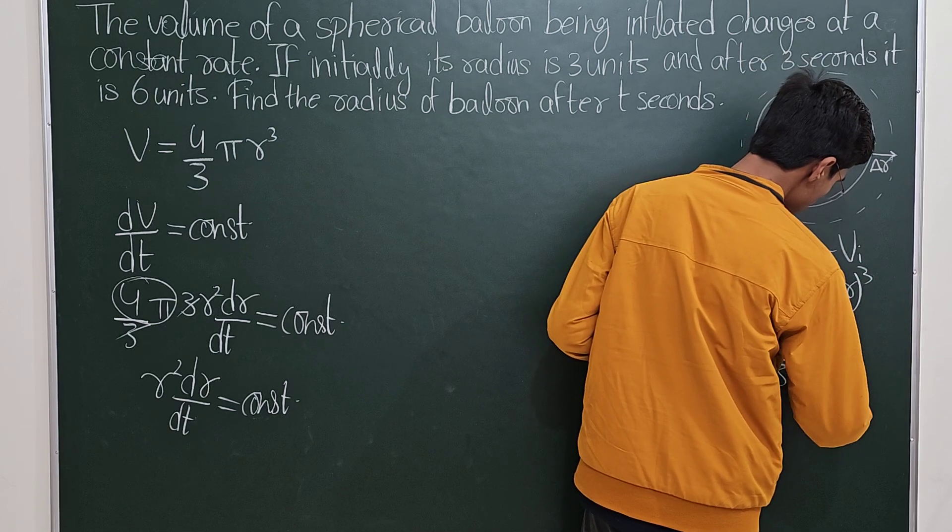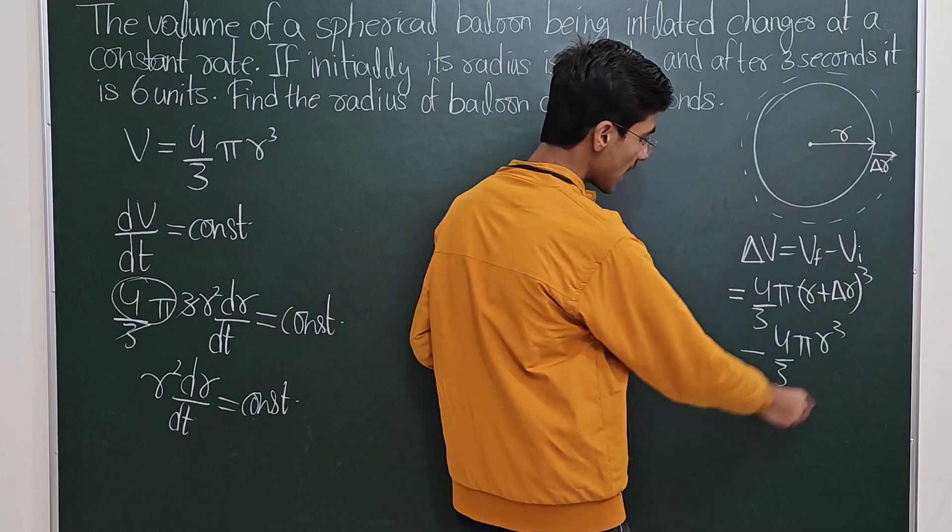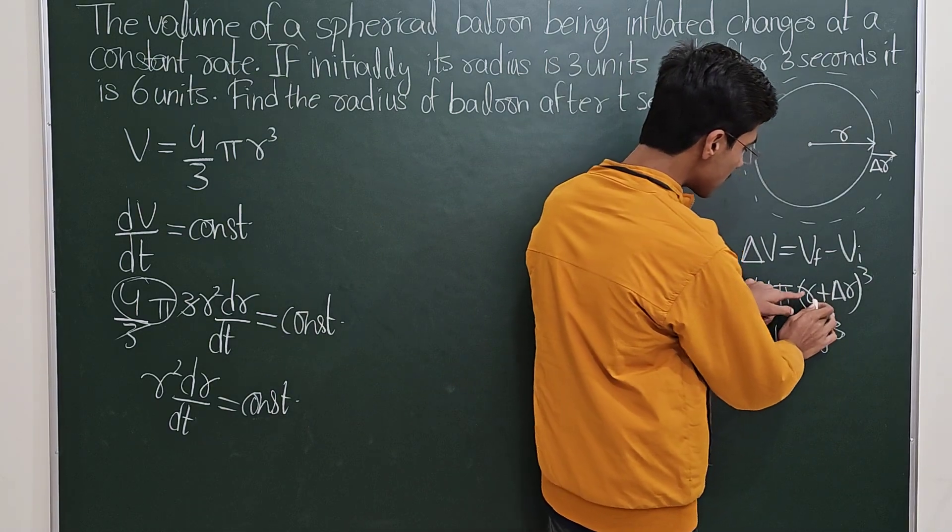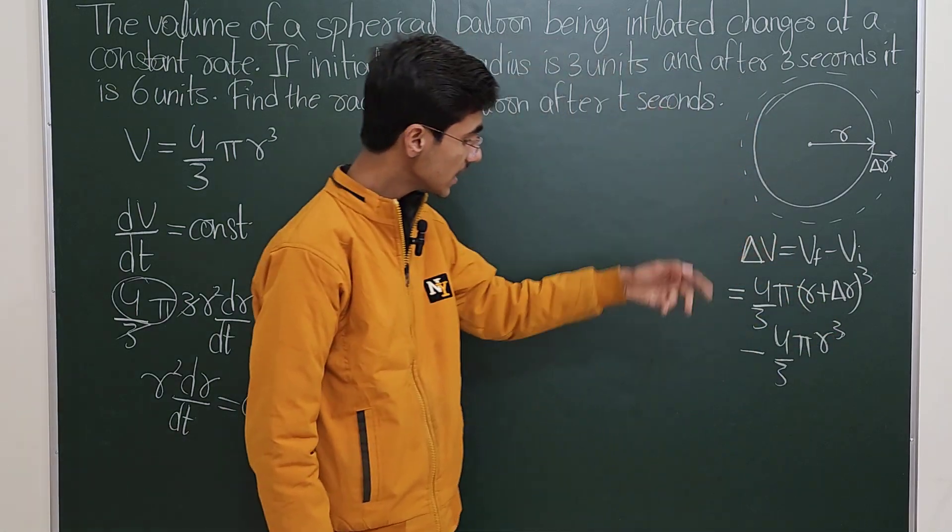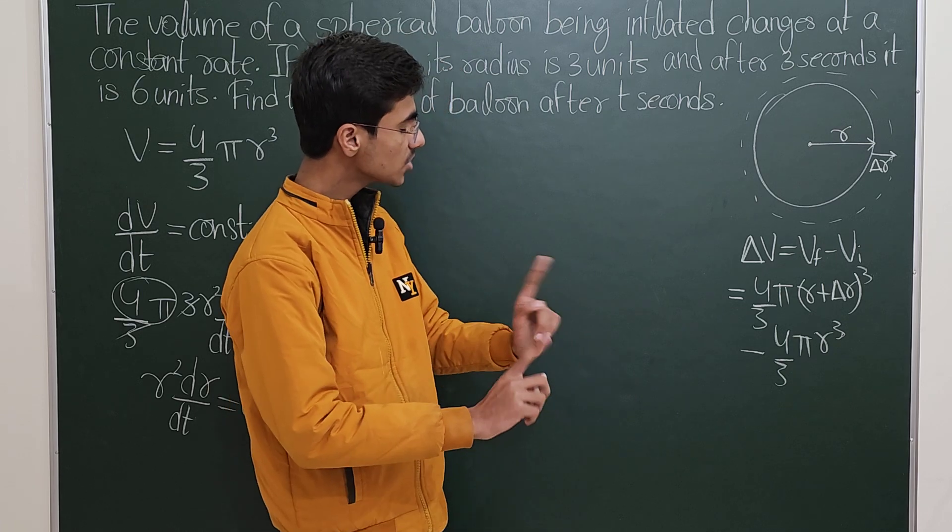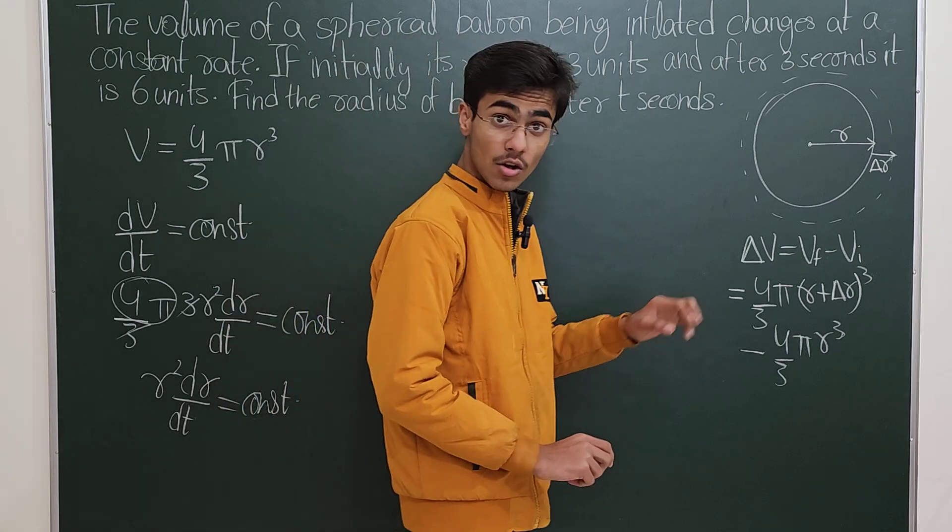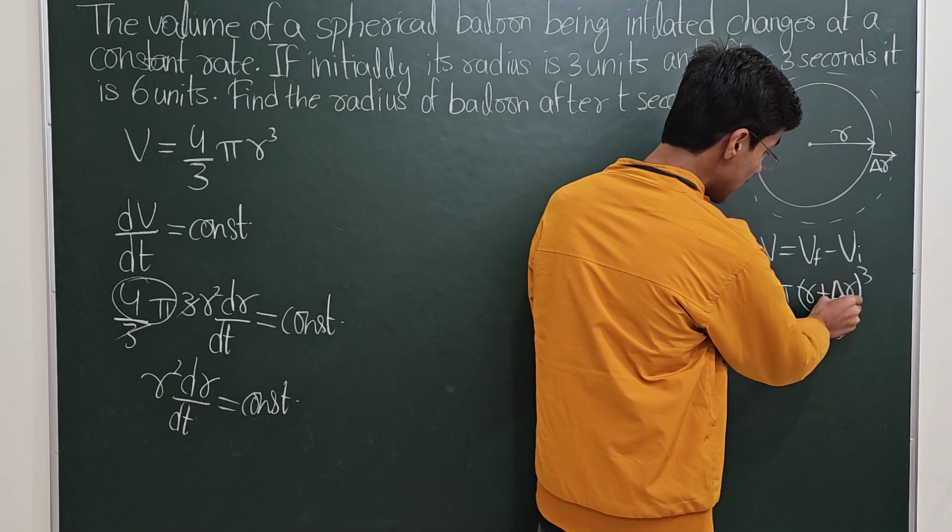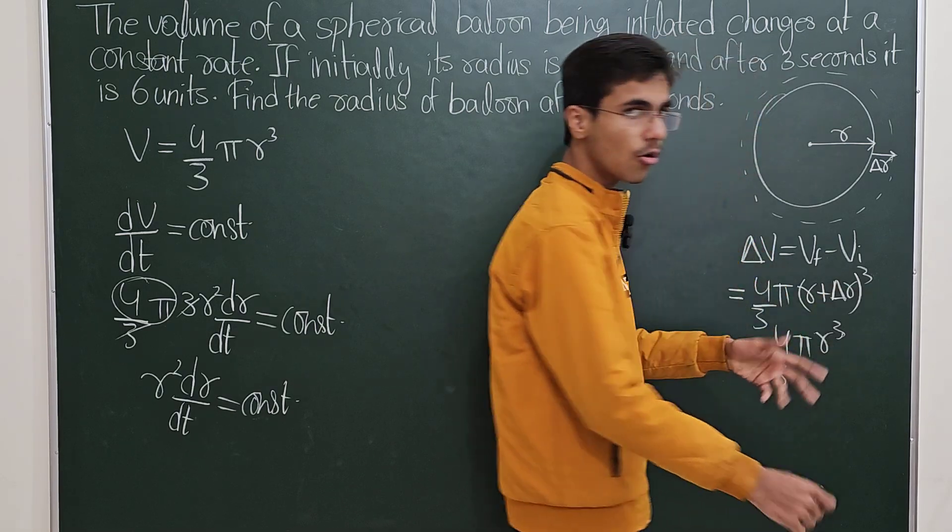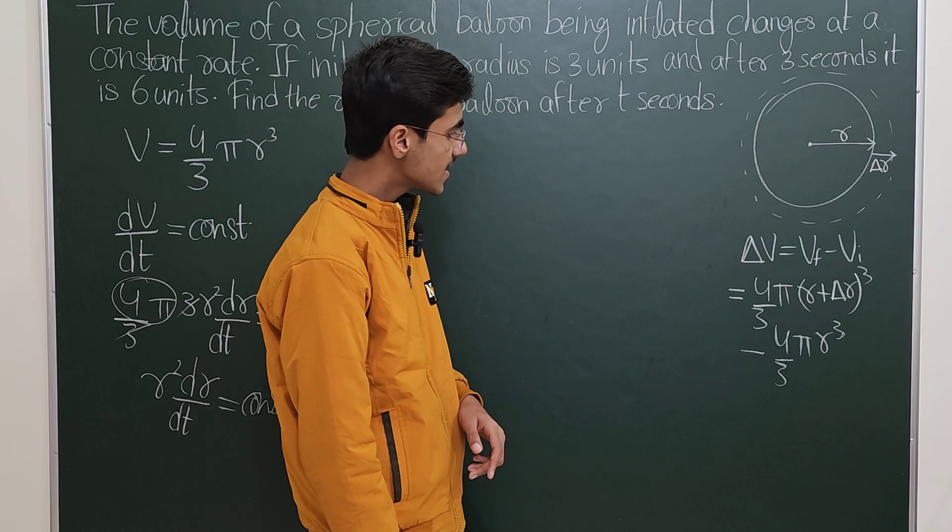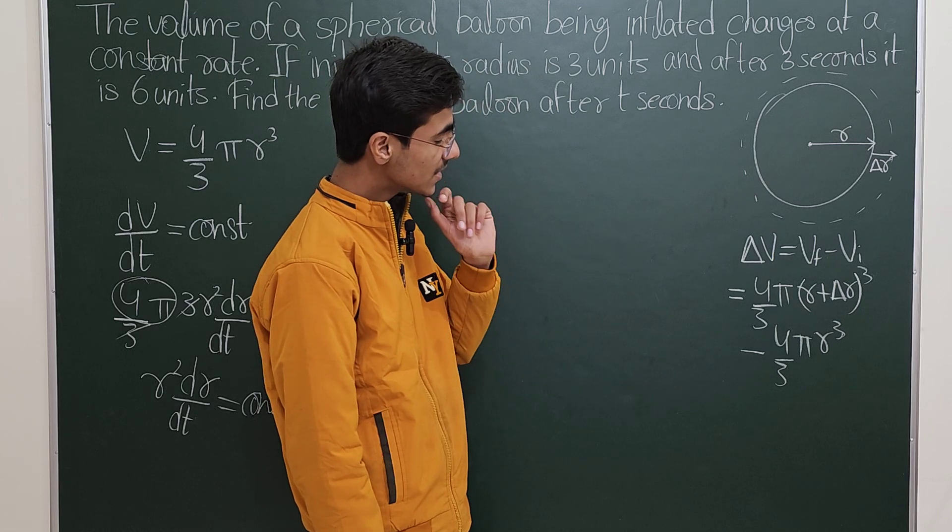You just subtract this thing and the r³ term gets cancelled out, and all that remains in this case is the terms that contain both r and Δr or individually Δr itself.